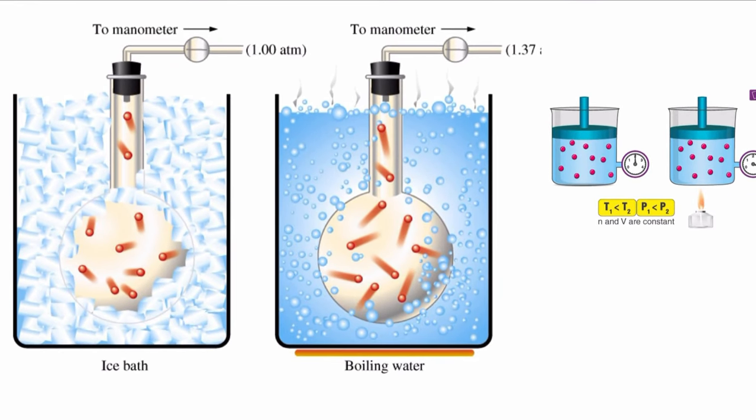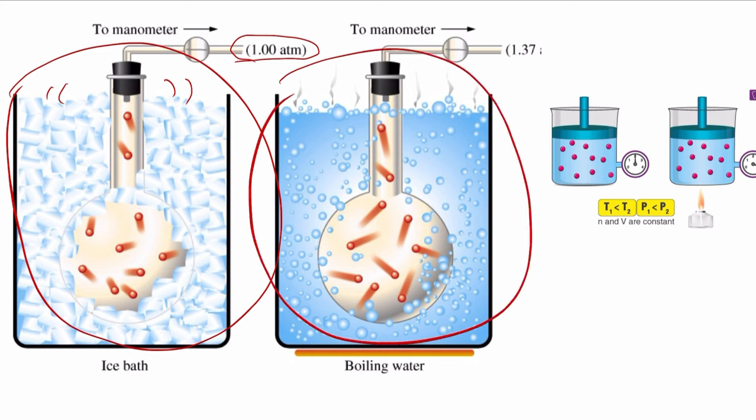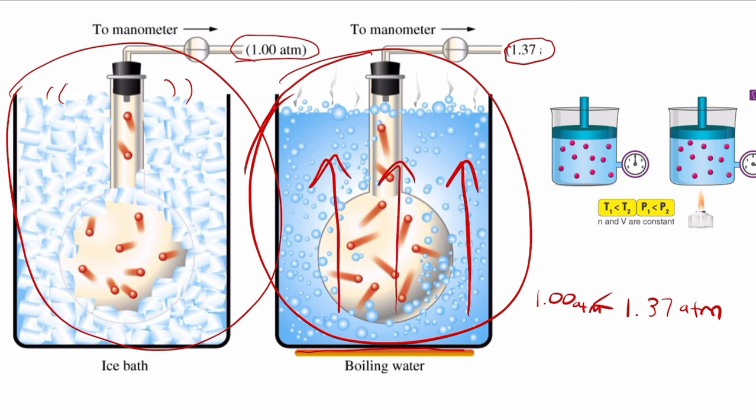Now if we look over to our schematic here, you can see that we have this container, quote unquote. It's really a flask, but it's something close. When we say container, it means it's something that's closed. We have an ice bath here, and the pressure is one atmospheric unit. In this second one, we have boiling hot water, and you can see the pressure is 1.37. 1.37 is greater than 1.0. And why is this pressure greater? Because this is boiling water. The temperature is increasing. You can see temperature does play a big role on the pressure within the container.